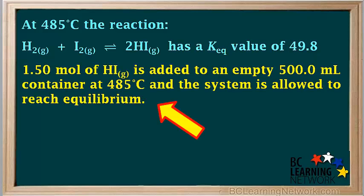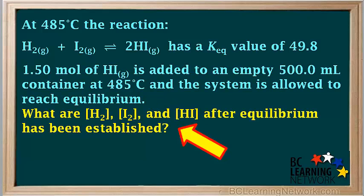1.5 moles of HI is added to an empty 500 milliliter container at 485 degrees, and the system is allowed to reach equilibrium. What are the concentrations of H2, I2, and HI after equilibrium has been established?